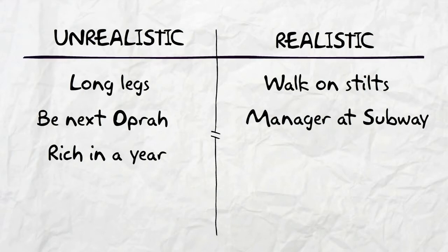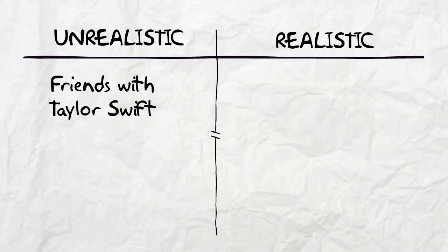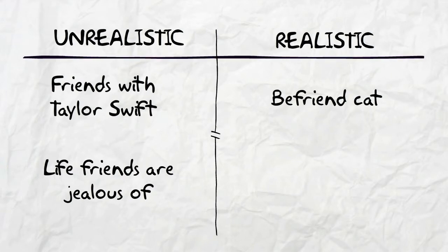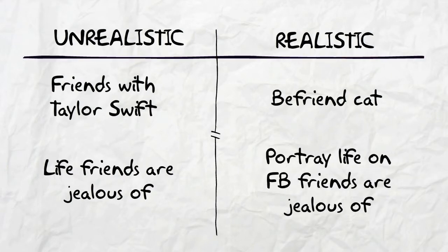Become rich in a year. Be able to afford to shop at the $2 shop in a year. Become friends with Taylor Swift. Befriend your cat so she stops scratching you. Have a life your friends are jealous of. Portray a life on Facebook your friends are jealous of.